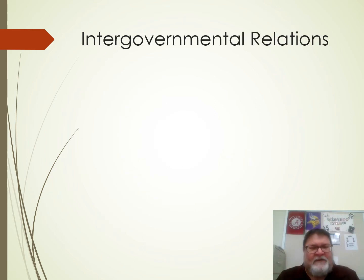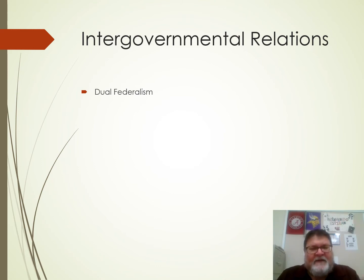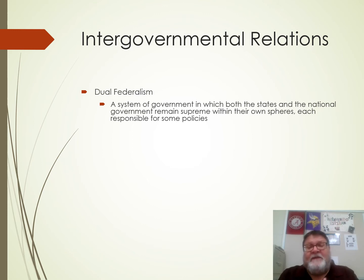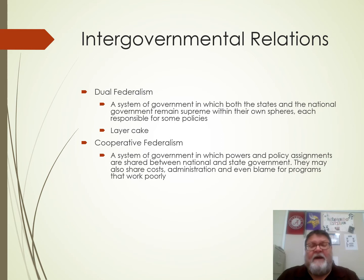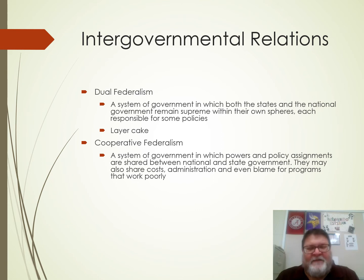The last subject is intergovernmental relations, and we've got a bunch of these to go through. Dual federalism is a system of government where both state and national governments remain supreme in their own spheres, each responsible for some policies — the analogy used in AP Gov is a layer cake, where the layers of government are distinct. Cooperative federalism is a system where government powers and assignments are shared and intermingled — they share costs and administrations, sometimes even blame. We think of cooperative federalism as the opposite of layer cake: it is marble cake, with intermingled responsibilities. Lastly, fiscal federalism, which is the money part, is a pattern of spending and taxing that provides grants in the federal system — it is the cornerstone of national and state relations with local governments.